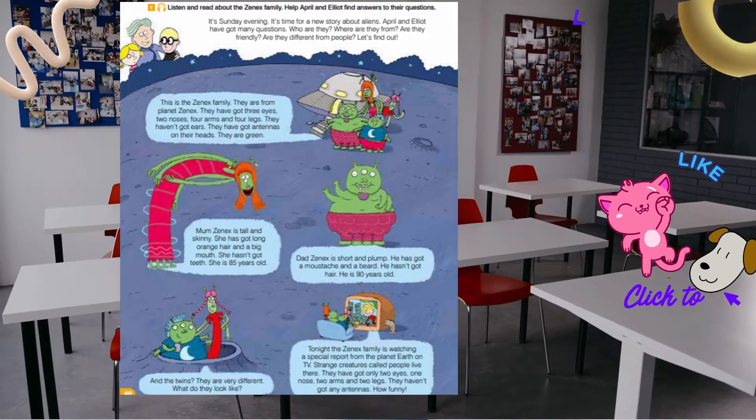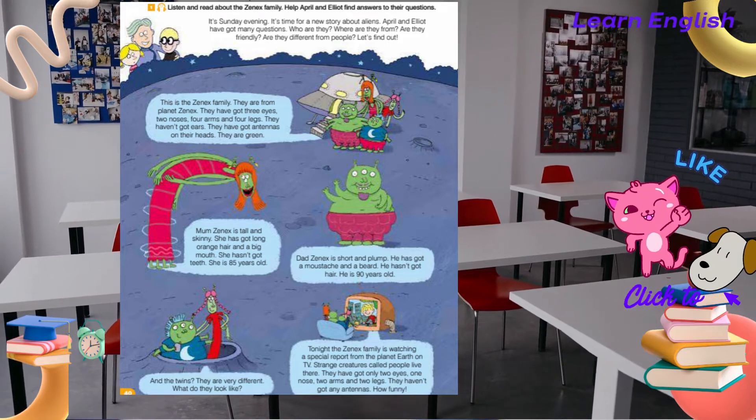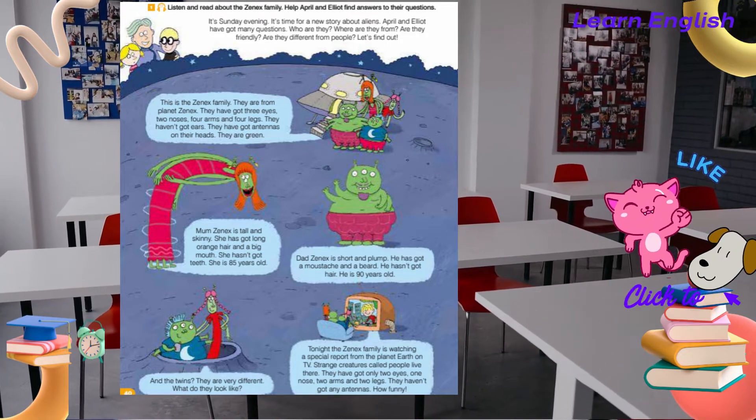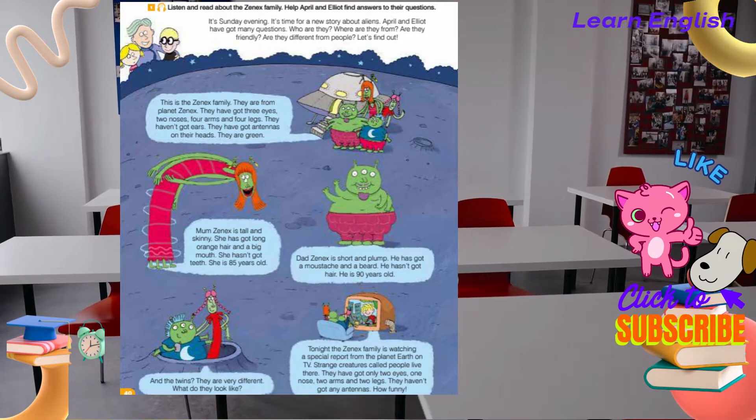This is the Xenex family. They are from planet Xenex. They have got three eyes, two noses, four arms and four legs.